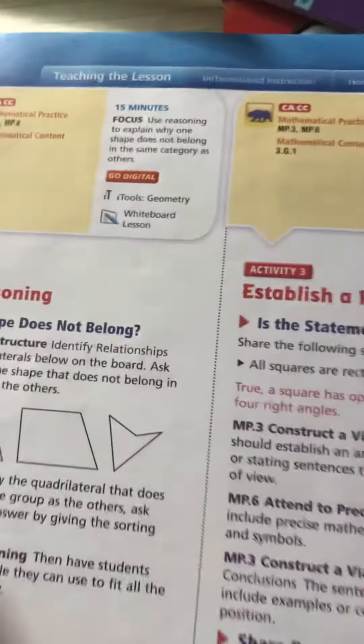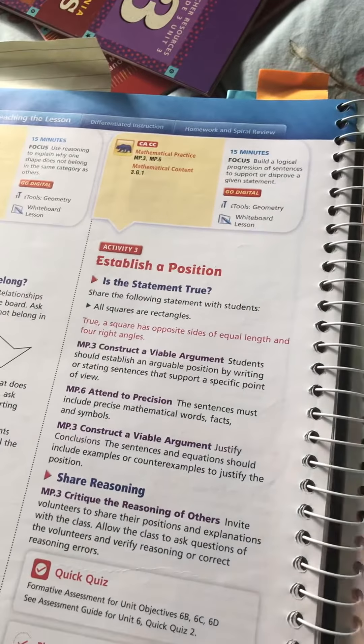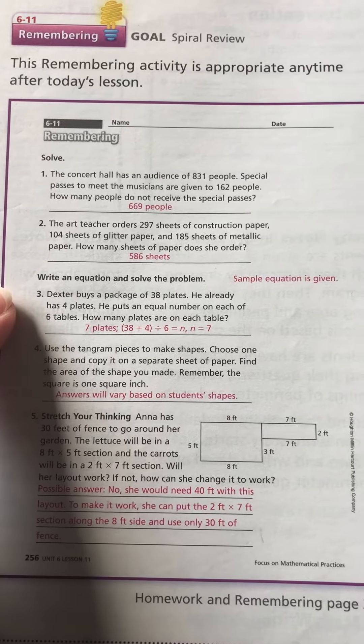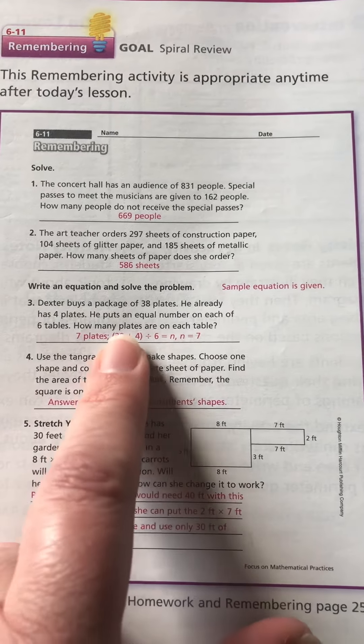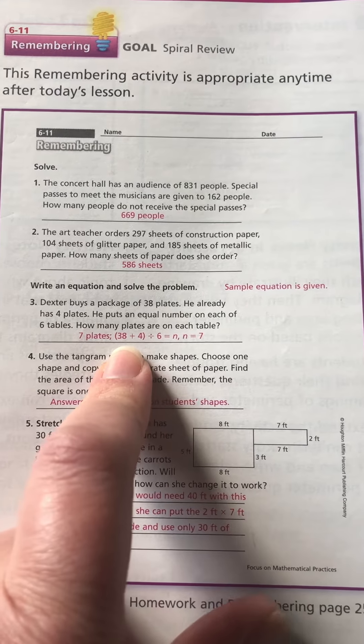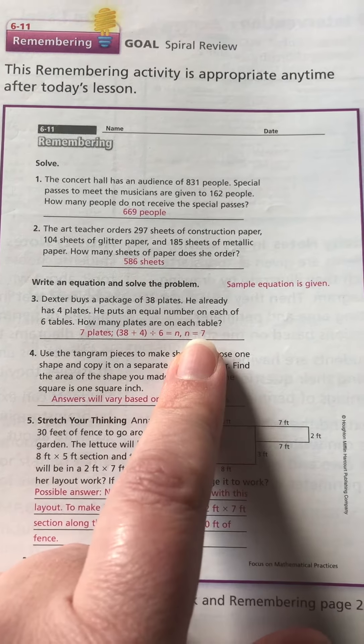If we take a look at the homework for this particular lesson: number one, his answer would be 38 cups. Number two, 30 feet. And number three, the possible answer would be 24 square feet if you use the same drawing as I did. On the backside: solved 669 people, 286 sheets of paper. Number three, you needed an equation - definitely need to have those parentheses there to know what to do first, which would make this seven plates.